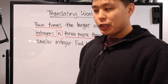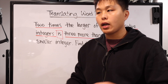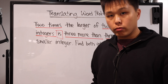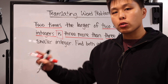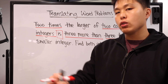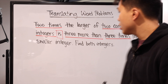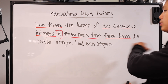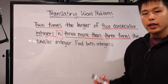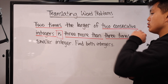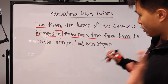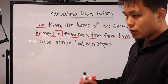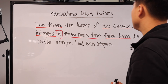What better way to end the video than with an example, just to see where these words come up. I really like this problem because not only does it use a lot of the words I was covering, but it is also dependent on your understanding of the word problem — you need to understand the context of what it's asking. Here it is: 'Two times the larger of two consecutive integers is three more than three times the smaller integer. Find both integers.' First and foremost, we should find the variables.